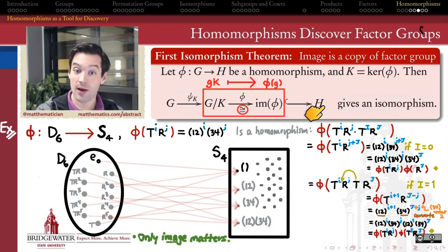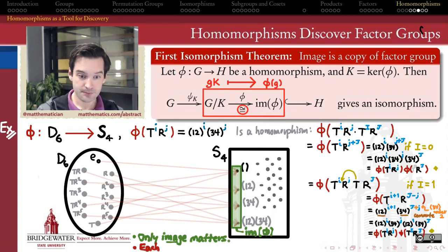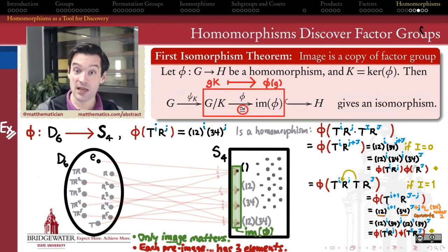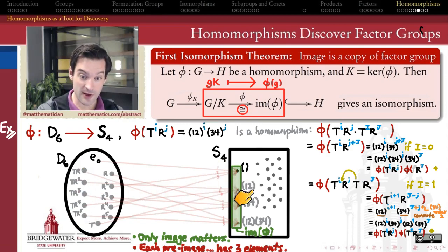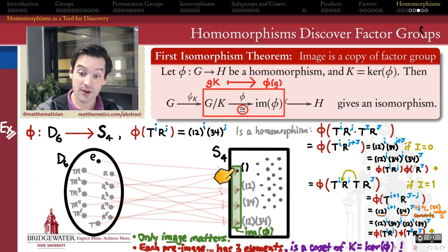The first step in the first isomorphism theorem is restricting ourselves from the whole target group down to just the image, giving us a function that can be onto. The next thing we notice is that each element in the image is hit the same number of times — topologists call this a regular function, where every element has the same number of pre-images. In this example that's three: the identity comes from three elements, (1 2) from three, (3 4) from three, and (1 2)(3 4) from three.